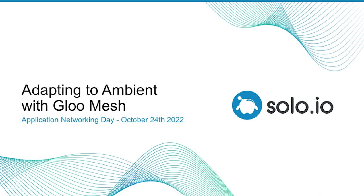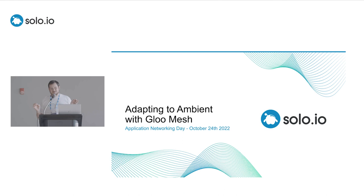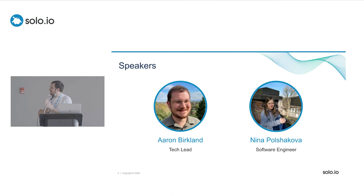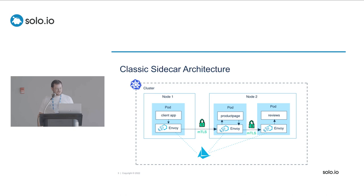So this is to give a high level overview of how Gloo Mesh could be helpful in adapting to ambient, because as you peel away the layers, there are actually a few nuances that you need to be aware of when adapting to ambient mesh. This gives you a big picture of what's going on and how Gloo Mesh can be helpful.